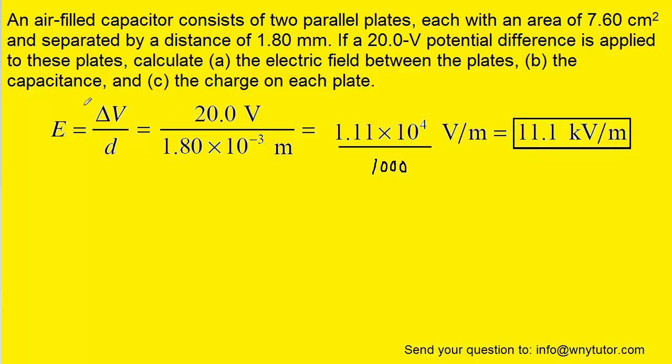For part B, to calculate the capacitance, we recall that is equal to a constant multiplied by the area of the plate divided by the distance between the plates. We've already talked about converting the distance into standard units. The area of the plate needs to be converted into meters squared.